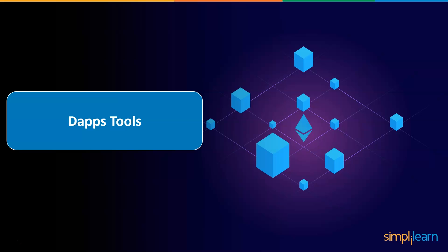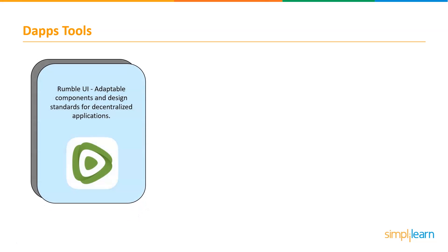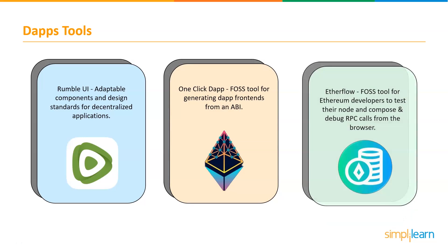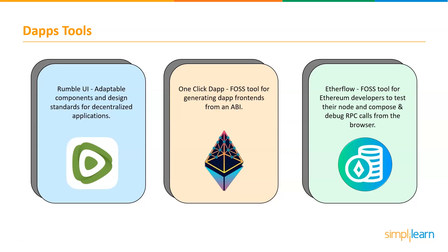Let's dive down and have a look at the DApp tools. Rumble UI — it's an adaptable component and design standards for decentralized applications. One-click DApps — it is a fast tool for generating DApps front-ends from an ABI. And Etherflow — it is also a fast tool for Ethereum developers to test their nodes and compose and debug RPC calls from the browser.